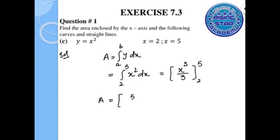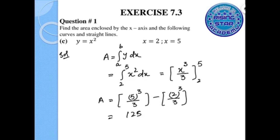Substituting the limits: 5 to the power of 3 over 3 minus 2 to the power of 3 over 3. That gives us 125 over 3 minus 8 over 3.